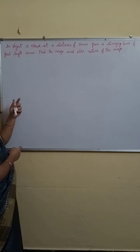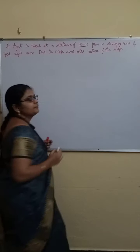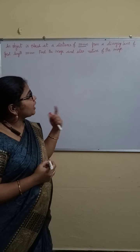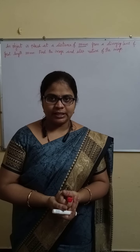Here, an object is placed at a distance of 150 mm. In terms of mm they have given, and from a diverging lens. Diverging lens means what? It is a concave lens.